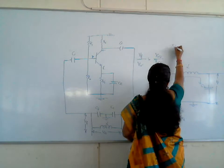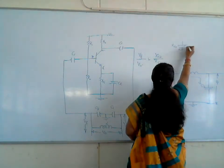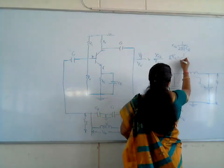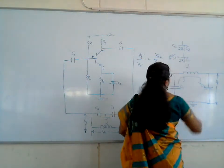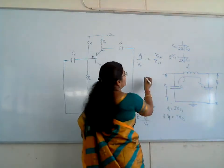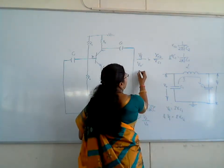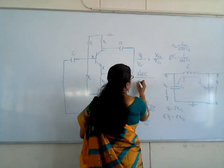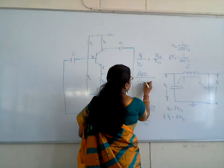What is Xc2? Xc2 is equal to 1 over 2πfC2, and Xc1 is equal to 1 over 2πfC1. By dividing these two, what I get is 1 over 2πfC2 divided by 1 over 2πfC1.